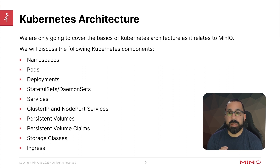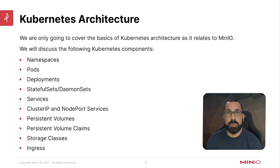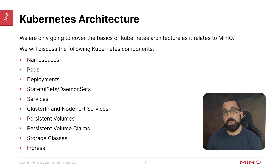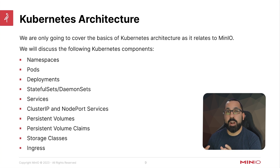There are different types of services: cluster IP, which is internal to the cluster only, and node port services, which expose a high ephemeral port outside the host. We're going to talk about persistent volumes and persistent volume claims — those are what you will use for storing all of your MinIO data. We'll also talk about storage classes for different types of storage, such as SSDs or NVMe for fast high-performance workloads, versus hard disk storage that is cheaper with larger capacity for archive workloads.